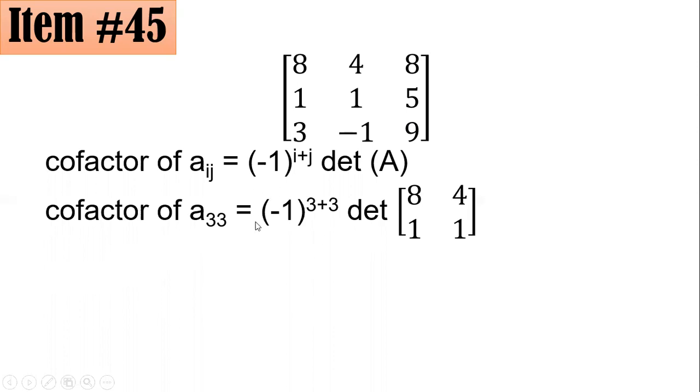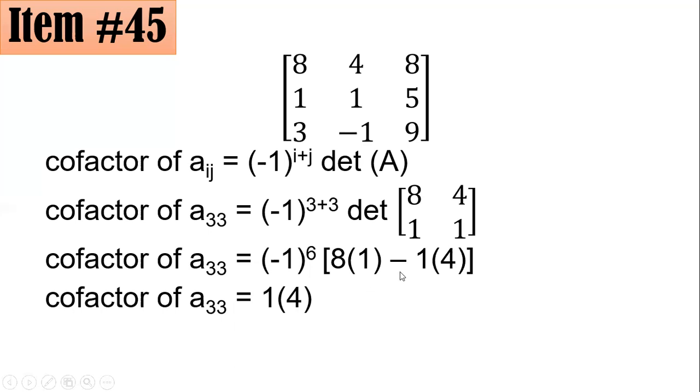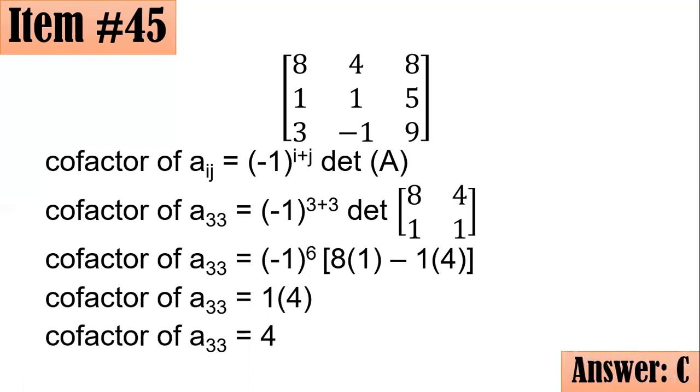And using the formula now, we have negative 1 raised to 3 plus 3, times the determinant of the matrix that was left after deleting the third row and the third column. Negative 1 raised to 3 plus 3 becomes negative 1 raised to 6. And to get the determinant of this 2 by 2 matrix, just multiply 8 times 1 and subtract it with 1 times 4. I hope you are familiar in getting the determinant of a 2 by 2 matrix. Negative 1 to the 6 is positive 1 and multiply that with 8 minus 4. You have 1 times 4 or 4. So the cofactor of a sub 33 is 4, letter C.